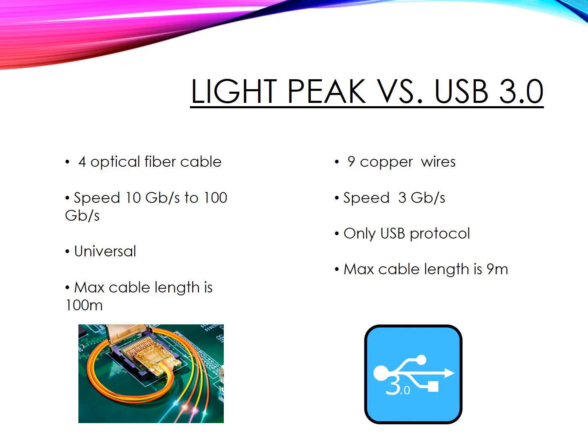Let us look at the comparison between Light Peak and USB 3.0. Light Peak has 4 optical fiber cables, 2 for each direction, whereas USB 3.0 has 9 copper wires. The Light Peak speed varies from 10 Gbps to 100 Gbps, whereas the speed of USB 3.0 is 3 Gbps. Light Peak is universal, meaning it can run any of the protocols like HDMI, DisplayPort, PCI Express, USB, and SATA, but USB can only run the USB protocol. The maximum cable length in Light Peak is 100 meters, whereas the maximum cable length in USB is 9 meters.